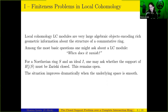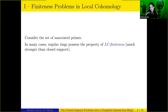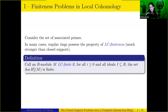The situation actually improves dramatically when the underlying space is smooth — you gain access to powerful structures that you would not have had otherwise. In particular, regular rings often possess a property called LC finiteness, which is much stronger than the closed support property. To define this for modules: an R-module M is LC finite if, for any cohomological degree i and any ideal I, the set of associated primes of the corresponding local cohomology module H^i_I(M) is finite.